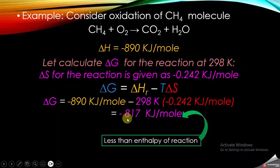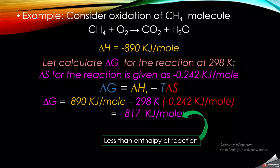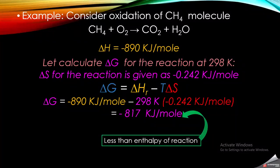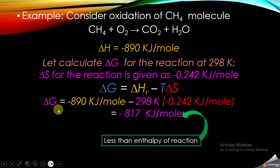So out of 890 kilojoule per mole, only minus 817 kilojoule per mole is actually the free energy available for doing any kind of work, like heating or cooking. That's why we call it free energy — because it is the available energy for doing work.